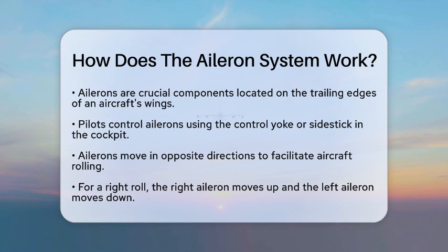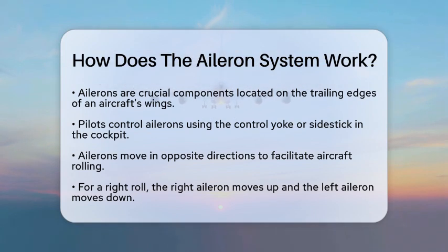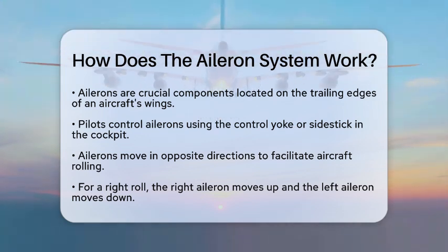Ailerons are hinged panels found on the trailing edges of an aircraft's wings. When a pilot wants to roll the aircraft, they turn the control yoke or side stick in the cockpit. This action causes the ailerons to move in opposite directions. For instance, if the pilot wants to roll to the right, the right aileron moves upward while the left aileron moves downward.